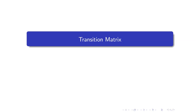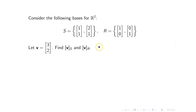In this lesson, we are going to discuss transition matrices. Consider the following basis for R2, and suppose that V is the column matrix [3, 2]. Let us find the coordinate vector of V with respect to the basis S and the coordinate vector of V with respect to the basis R.